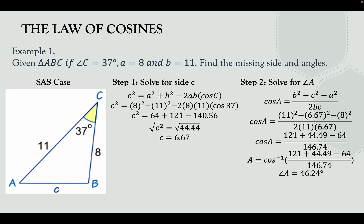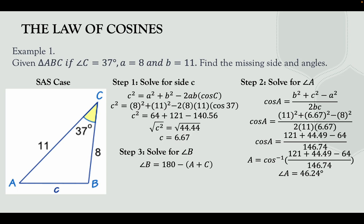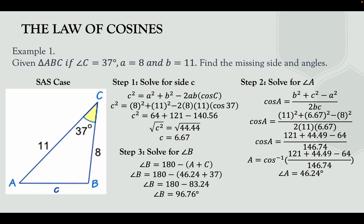Step three: find the third angle using the sum of interior angles. Angle B = 180° − (angle A + angle C) = 180° − (46.24° + 37°) = 180° − 83.24° = 96.76°.